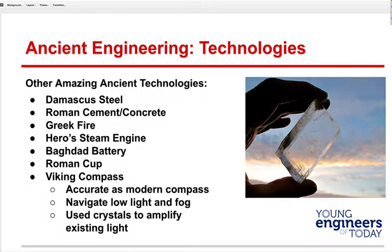Then there's the Viking compass. They would float a compass in a bowl, and by adding a crystal that magnified existing light, they found their compass was within four degrees accuracy — the same as a modern compass. The Vikings were way ahead on that one.